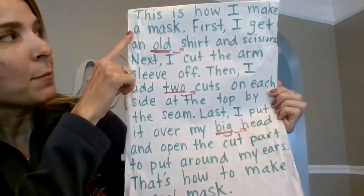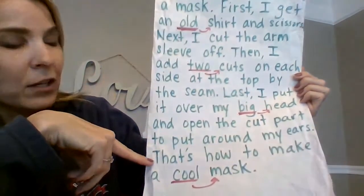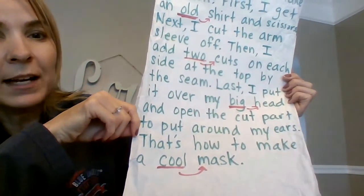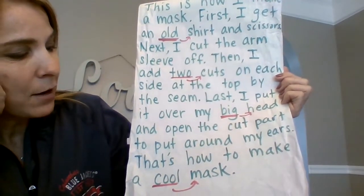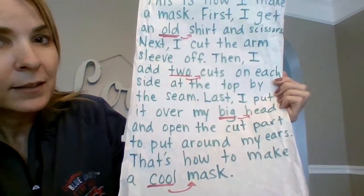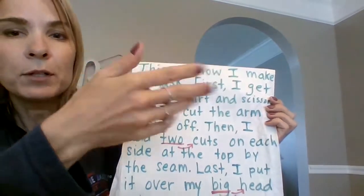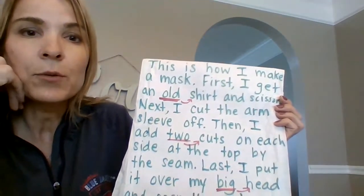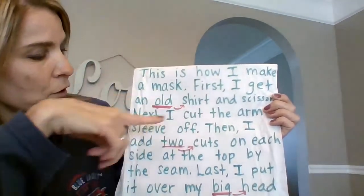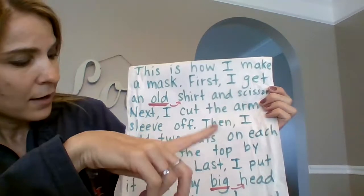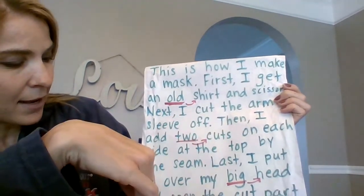I have my topic sentence at the top that tells you what I'm writing about: 'This is how I make a mask.' I have a conclusion sentence — that's what you'll be working on more in second grade. A conclusion just kind of wraps up what you've talked about: 'That's how to make a cool mask.' And in a how-to writing, you do want to put transitional words, like first, then, also, next, second, finally. So I do have first, next, last, and then.